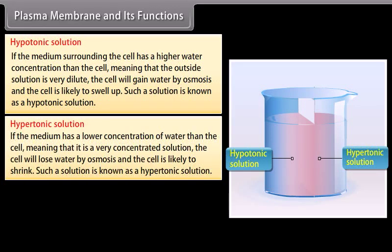Hypertonic solution: If the medium has a lower concentration of water than the cell — meaning it is a very concentrated solution — the cell will lose water by osmosis and is likely to shrink. Such a solution is known as a hypertonic solution.